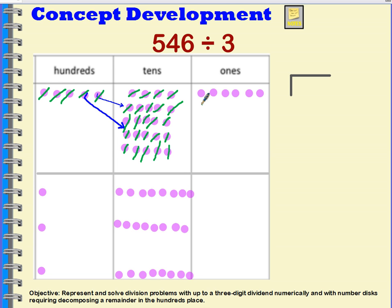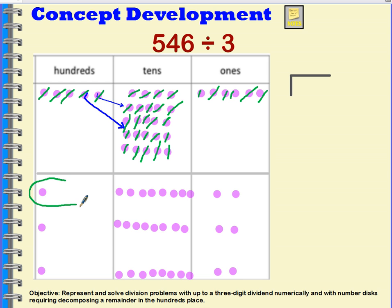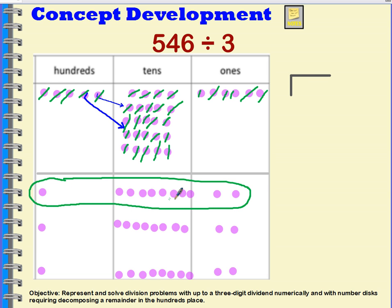Now I'm going to do my ones. I'll draw a line through three of the ones and then the other three ones, crossing them out and distributing them into my groups. So in each group I now have one hundred, eight tens, and two ones — that's one hundred eighty-two.